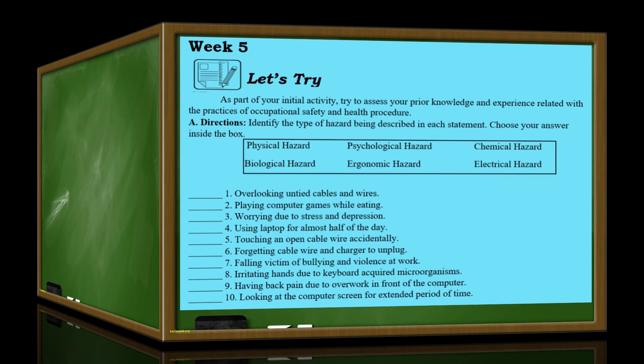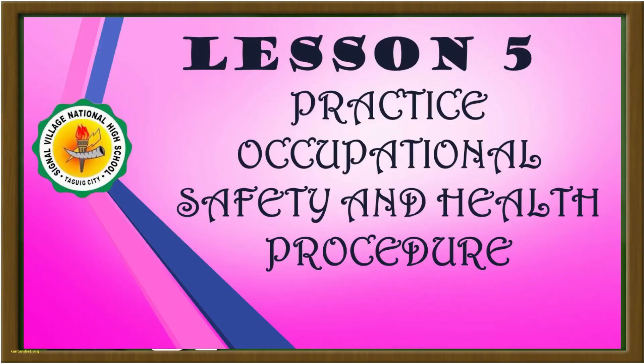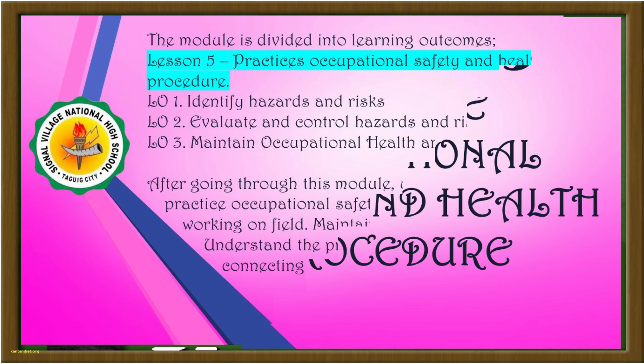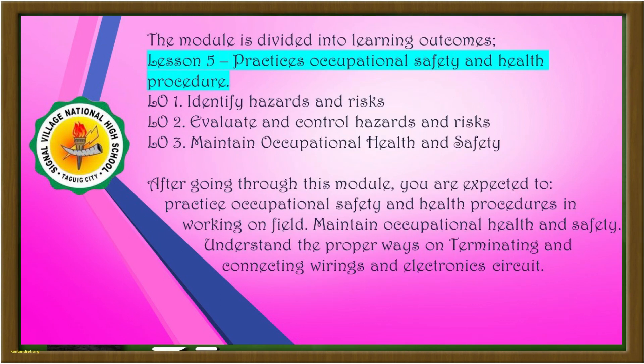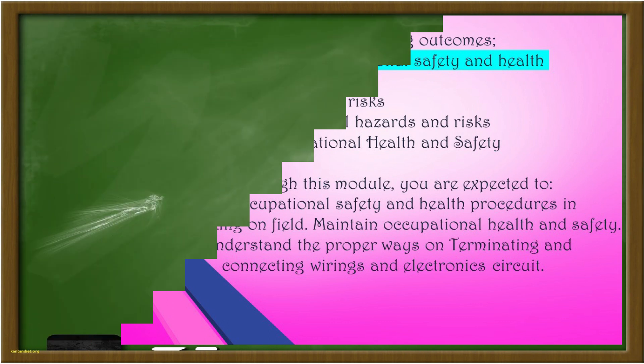If you got them all, very good. Lesson 5 is about practicing occupational safety and health procedures. In this lesson, you will identify hazard and risk, evaluate and control hazard and risk, and maintain occupational health and safety.